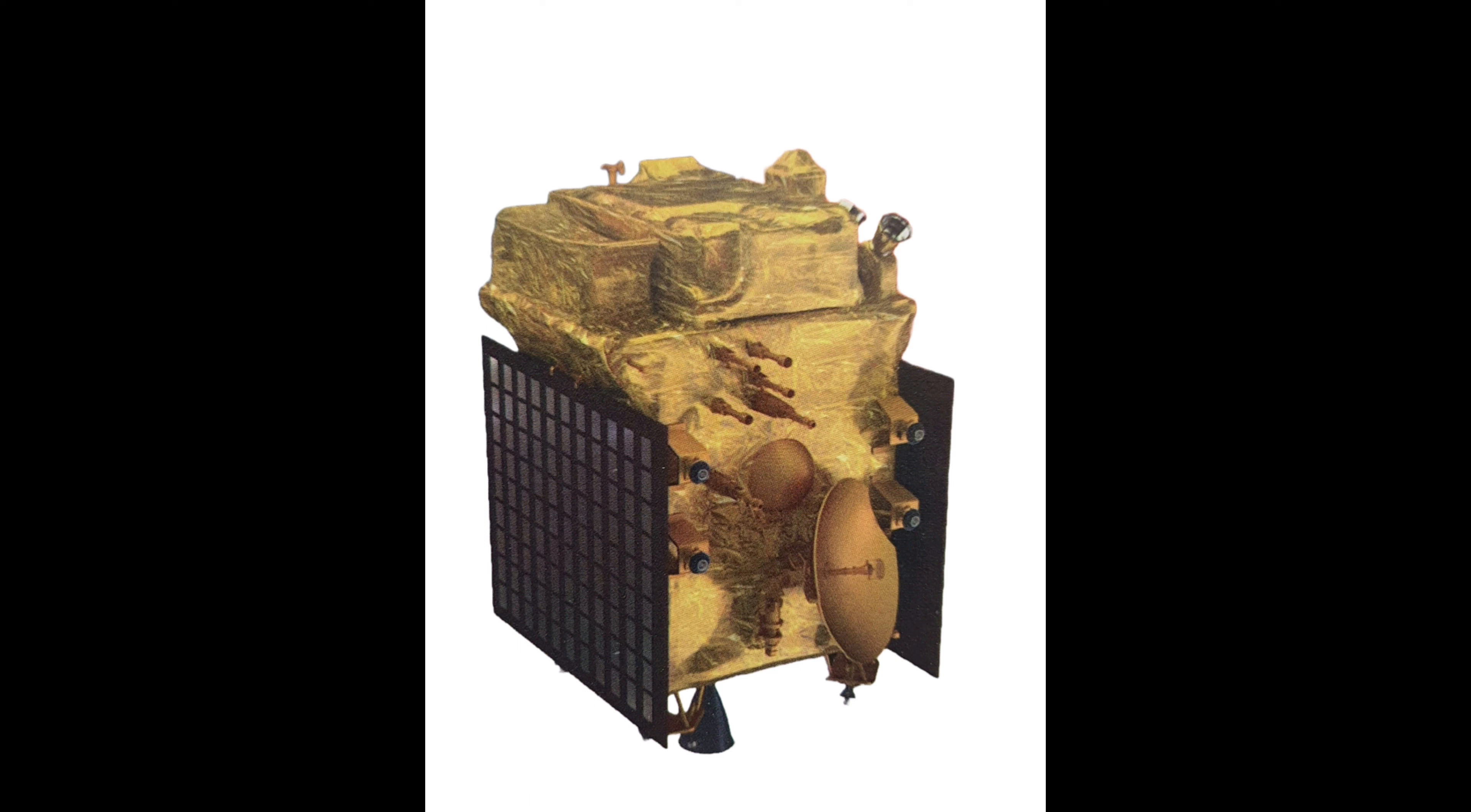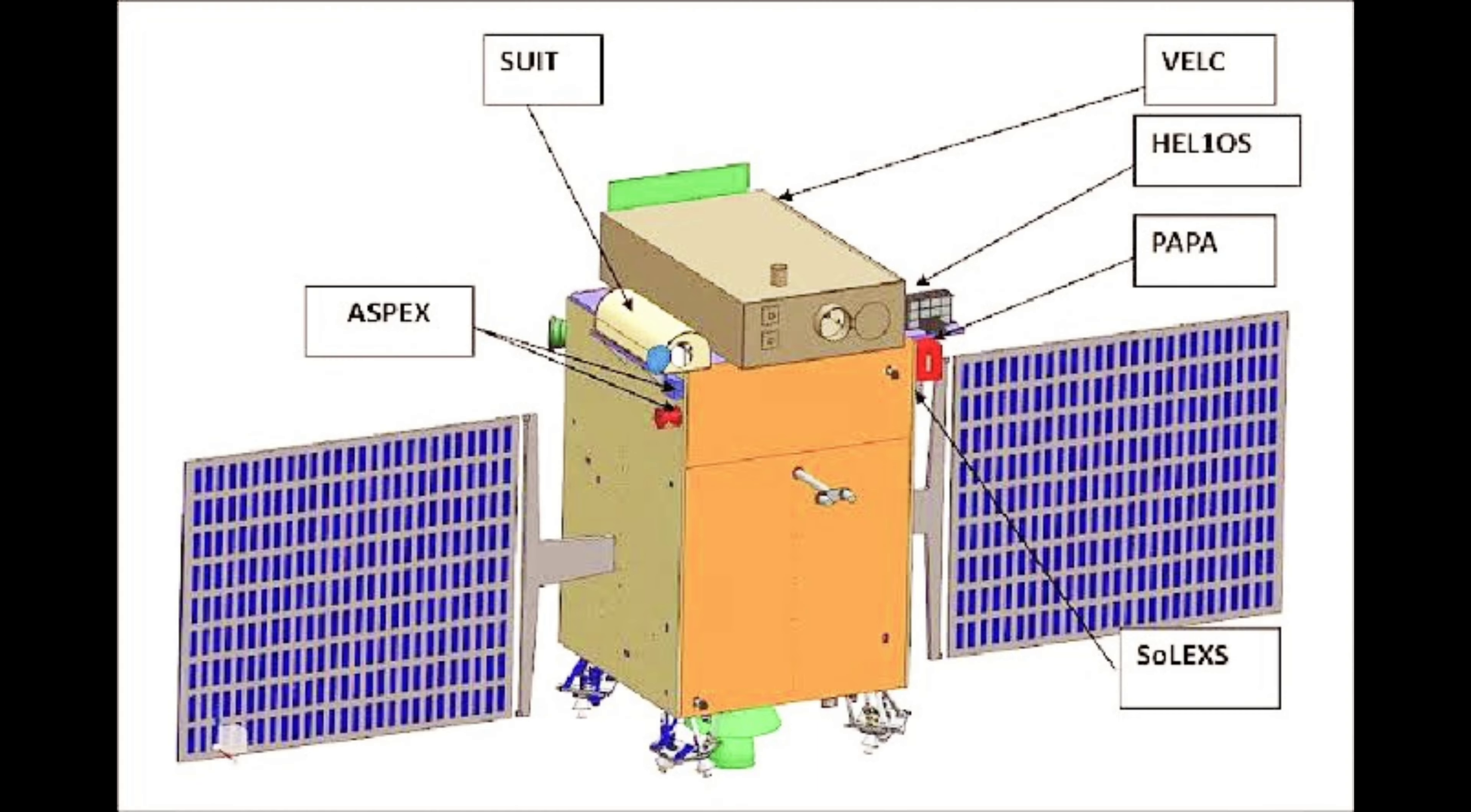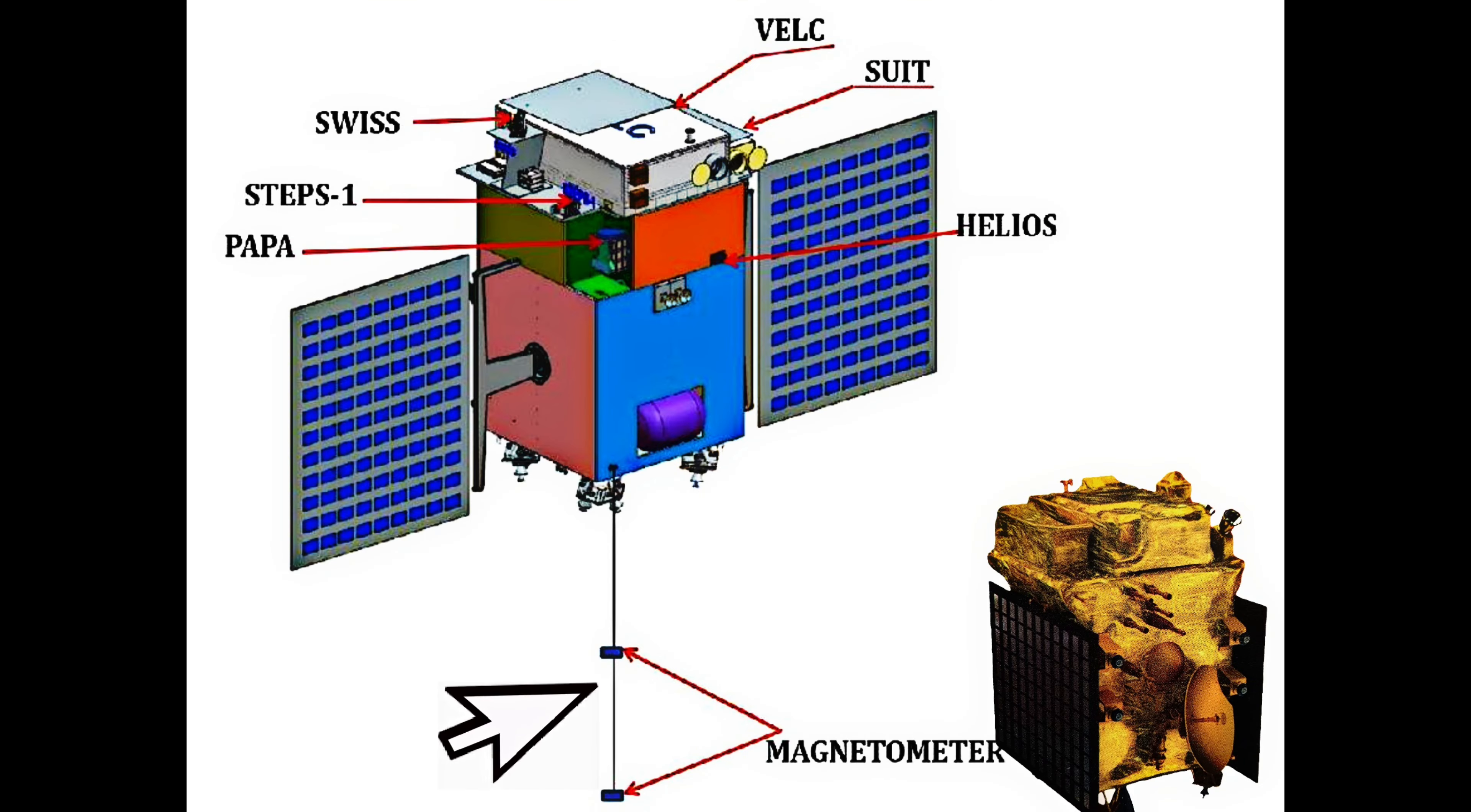The Aditya L1 spacecraft is equipped with seven payloads that will study different aspects of the sun. These payloads include Visible Emission Line Coronograph (VELC), Solar Ultraviolet Imaging Telescope (SUIT), Aditya Solar Wind Particle Experiment (ASPEX), Plasma Analyzer Package for Aditya (PAPA), Solar Low Energy X-ray Spectrometer (SOLEXES), High Energy L1 Orbiting X-ray Spectrometer (HEL1OS), and a Magnetometer.